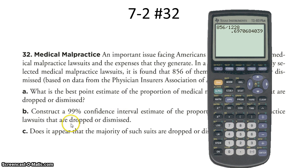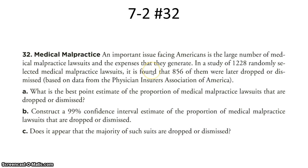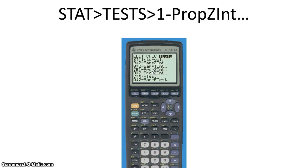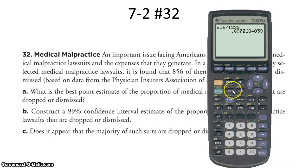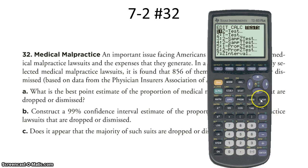For part B, they're asking us to construct a 99% confidence interval estimate of the true proportion of lawsuits that were either dropped or dismissed. We can use our point estimate and add and subtract the corresponding margin of error for our 99% confidence to get that interval. In your graphing calculator, we generate these confidence interval estimates by accessing Stat, then navigating to the Tests submenu and selecting 1PropZInt — meaning we estimate one proportion using the standard normal distribution by creating a confidence interval estimate.